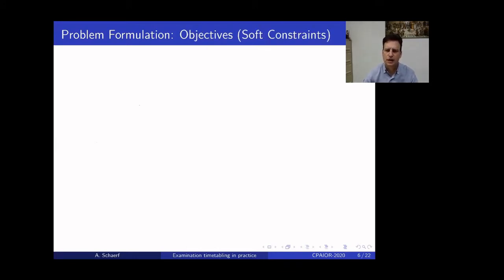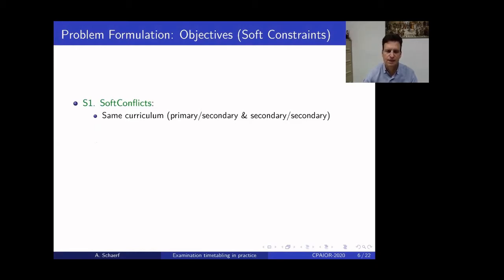Let's go to the soft constraints, so we have soft conflicts, so if they are in the same curriculum, but they are either primary, secondary, or secondary, secondary. And then we have soft preferences, so we can say it's not mandatory, but I would prefer not to be in that room, not to be in that period, and so on. Then there are distances between events, so if they are in the same exam, as we said, there is minimum and maximum distance. If they are in the same course between exams, there is also here a maximum and minimum distance. And then if they belong to the same curriculum, there are also distances. In this case, it's an undirected instance because it can be in any order, just we want to have some separation for giving rest to the students.